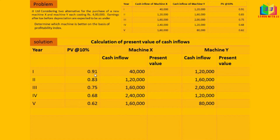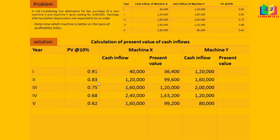For Machine X, the present value is calculated as: 0.91 × 40,000; 0.83 × 1,20,000; 0.75 × 1,60,000; 0.68 × 2,40,000; and 0.62 × 1,60,000. For Machine Y: 0.91 × 1,20,000; 0.83 × 1,60,000; 0.75 × 2,00,000; 0.68 × 1,20,000; and 0.62 × 80,000.